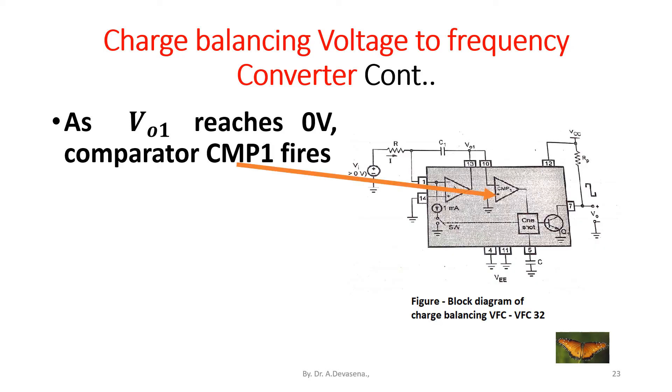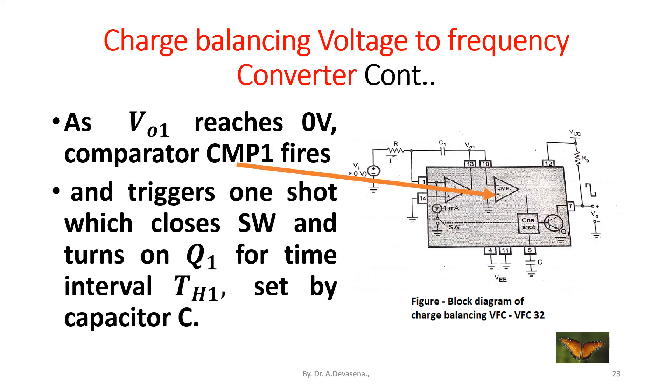the comparator C1 fires and triggers one-shot which closes switch and turns on Q1 for time interval T_H set by the capacitor C2.